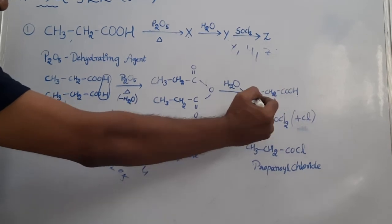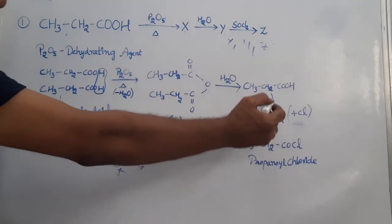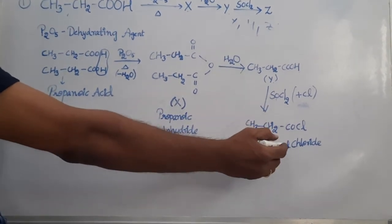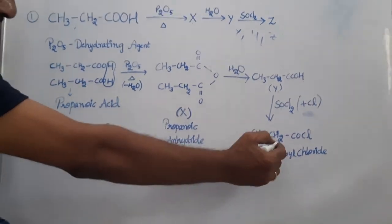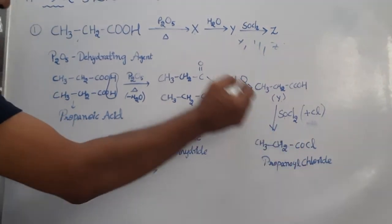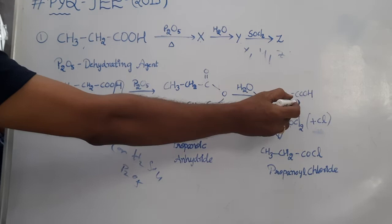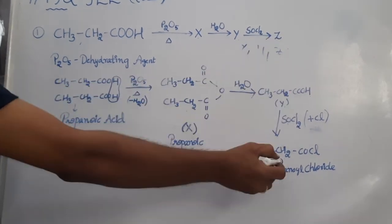Y reacts with SOCl2 to form propanoyl chloride, which is also called 1-chloropropanone. So the compound X is propanoic anhydride, compound Y is propionic acid, compound Z is propanoyl chloride.